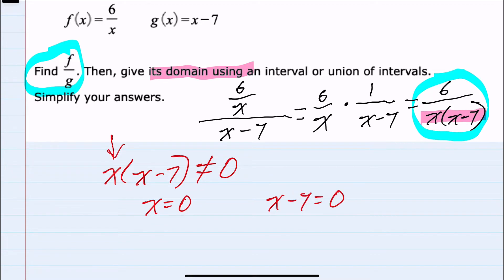So I'm going to want to exclude x equals 0, and also, isolating the x here, I also want to exclude x equals 7.